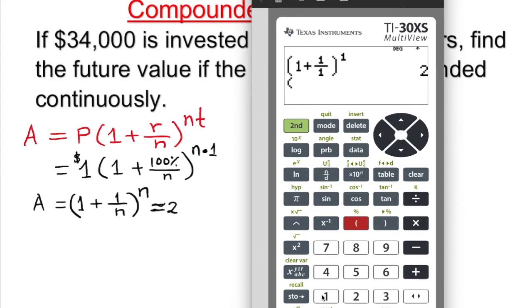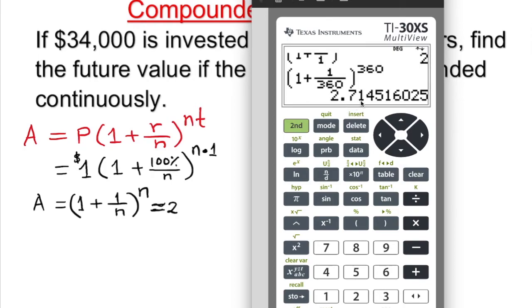Let's take a look what is happening. Now you'll see a huge change here. 1 plus 1 over 360. We know daily is 360. Go to the right, close parentheses. This is the power button and 360. Enter. Look what happened. Bingo. 2.7145 and so on. So as n increases, n increases, I'm going to actually use one more.